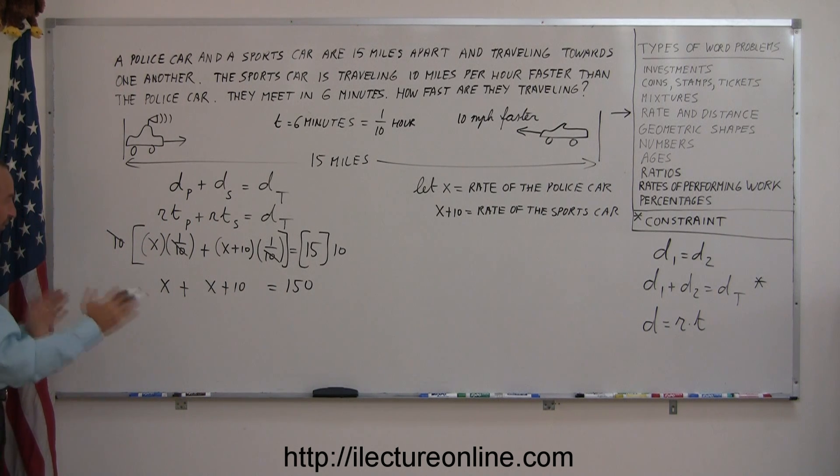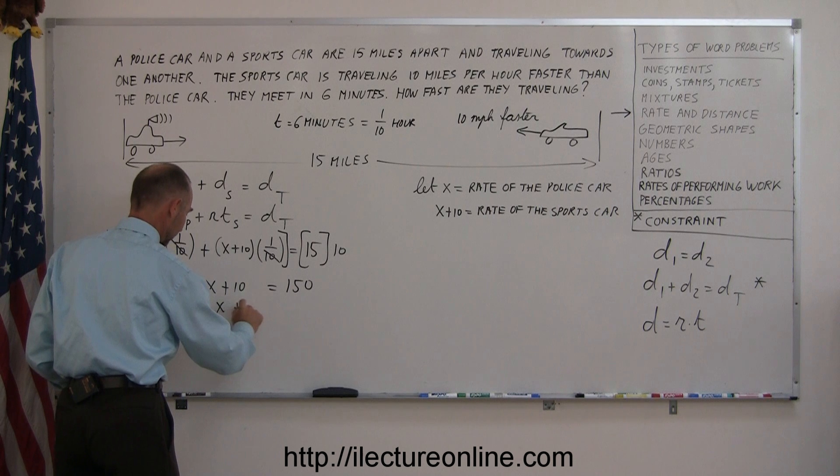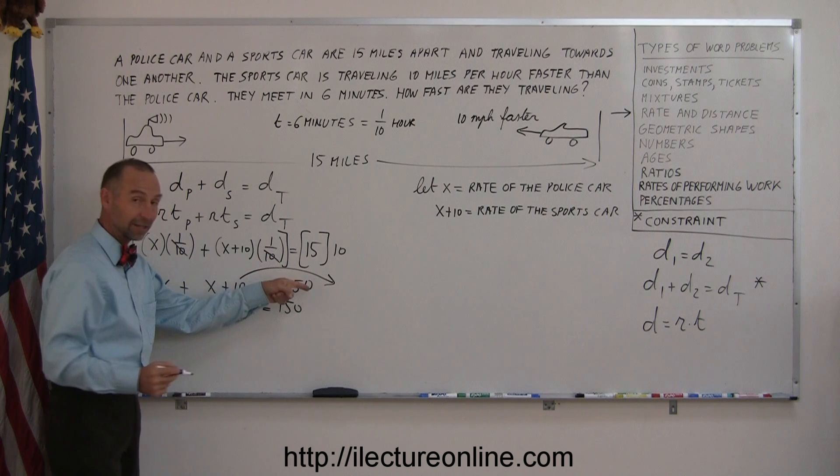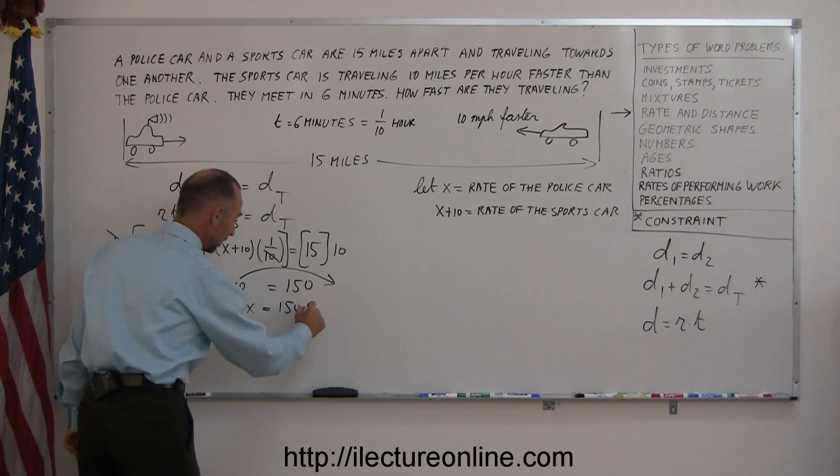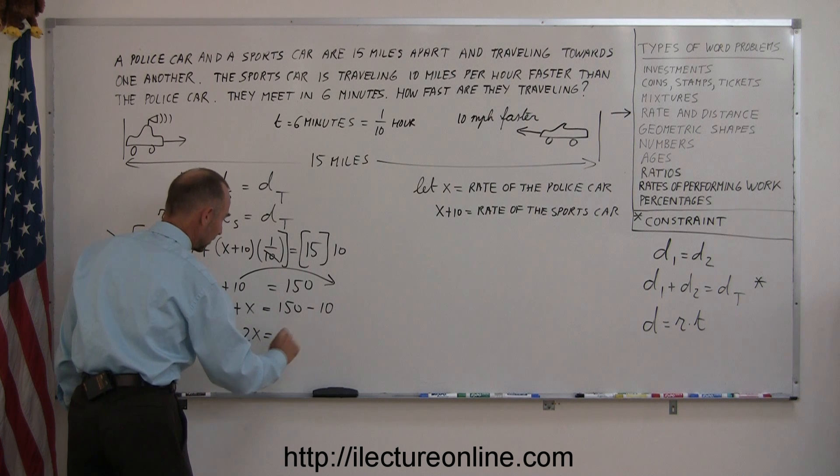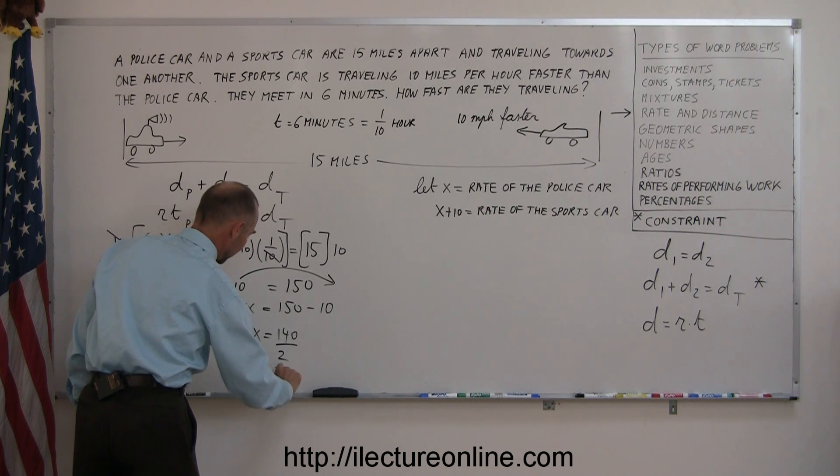Now we'll go ahead and put all the X's on one side, all the numbers on the other side. So on the left side, I have X plus X is equal to 150. The only thing I have to move is a 10. When the 10 moves to the other side, that goes equal sign, it becomes a minus 10. X plus X is 2X equals 150 minus 10, which is 140. Divide both sides by 2, and I get X equals 70.